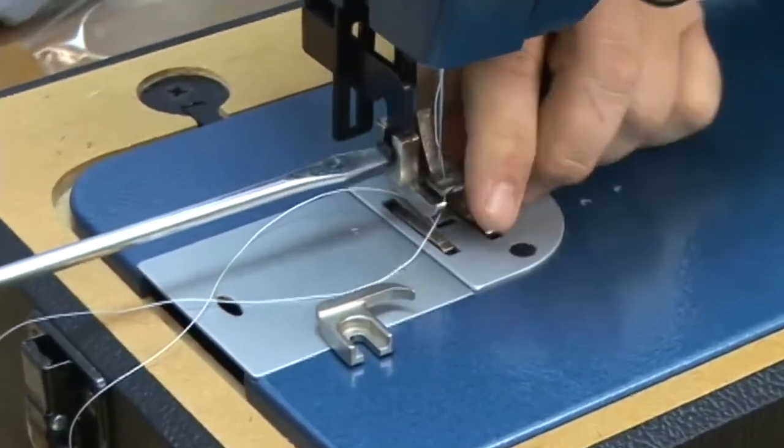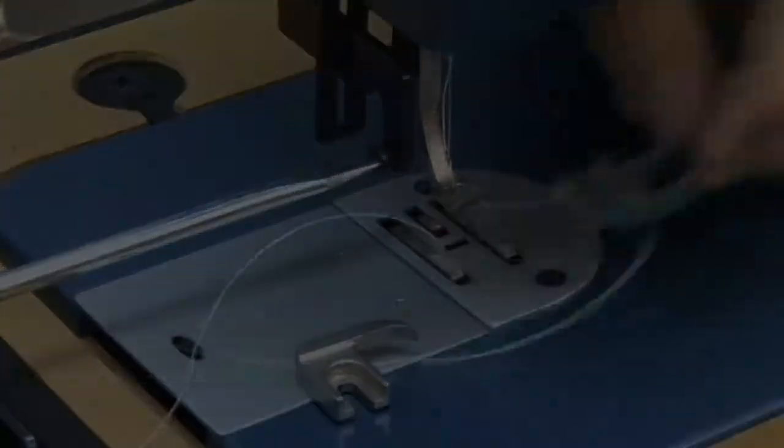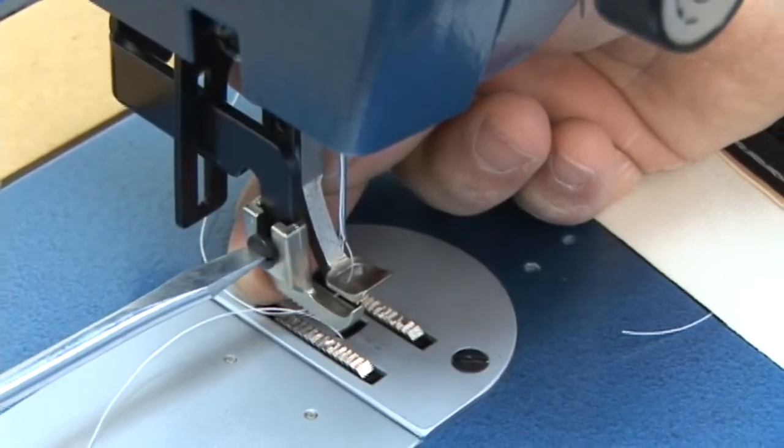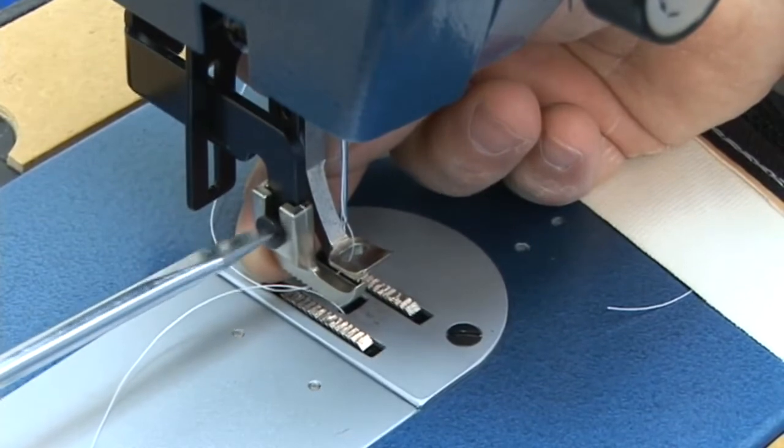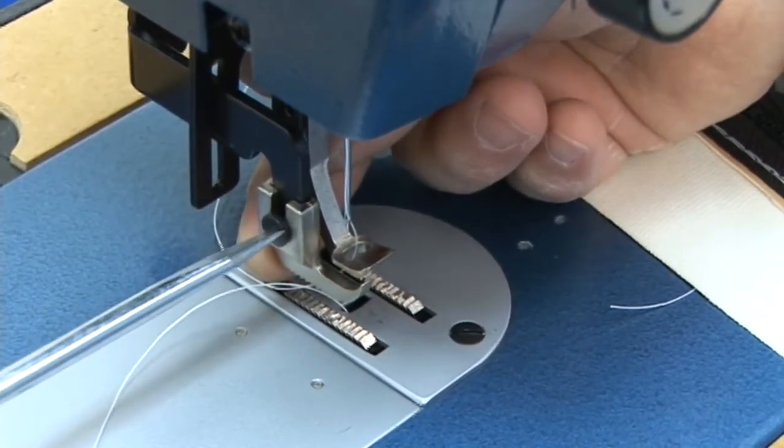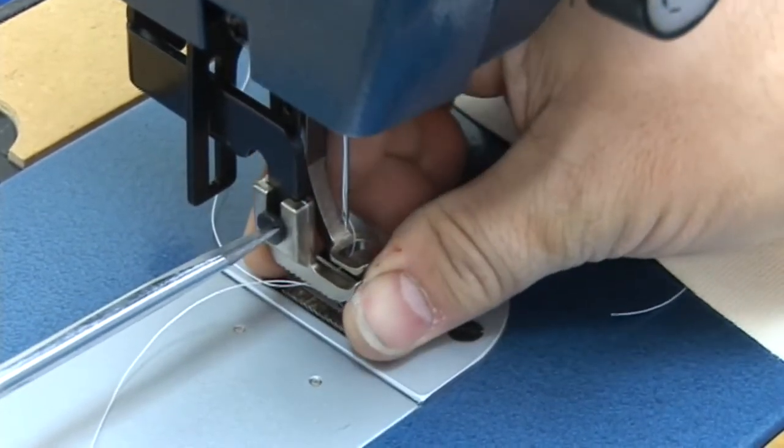We'll now remove the outer foot and replace it with the roping zipper foot left. When you put the new zipper foot on, make sure that you push it all the way to the top of the slot and then make sure that you get the set screw nice and tight.